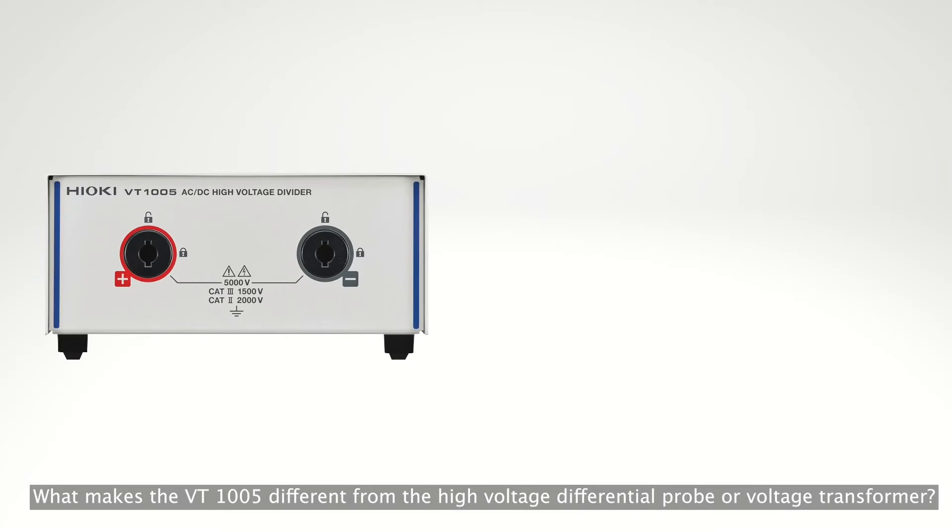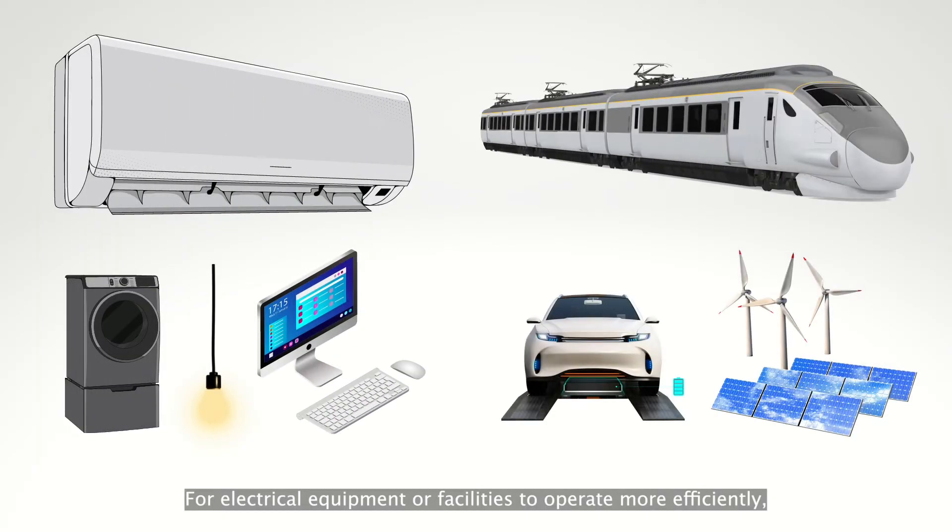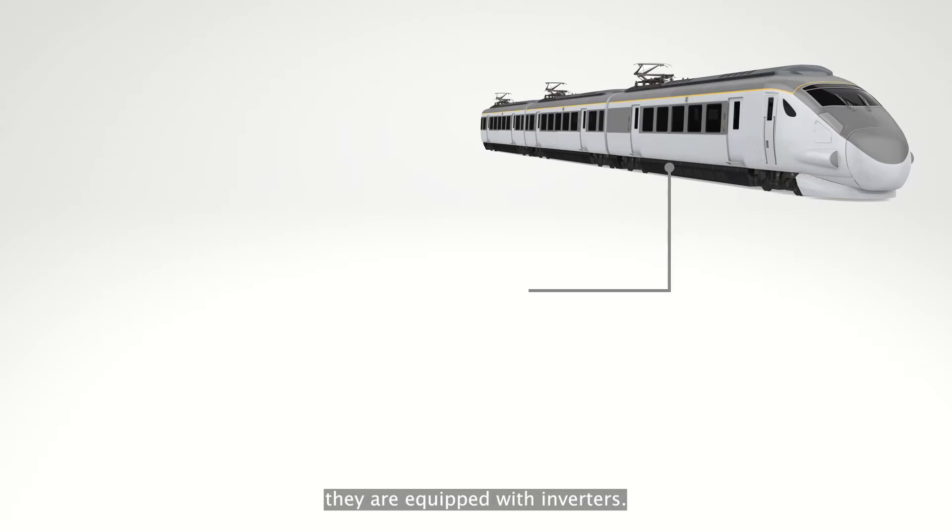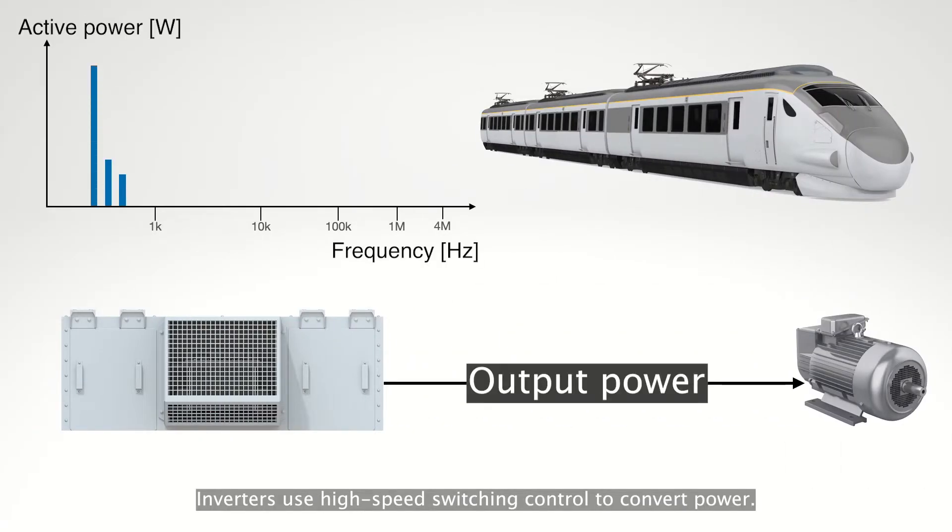What makes the VT1005 different from the high voltage differential probe or voltage transformer? For electrical equipment or facilities to operate more efficiently, they are equipped with inverters. Inverters use high speed switching control to convert power.